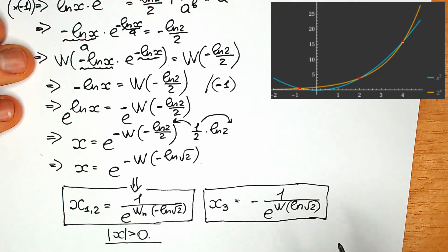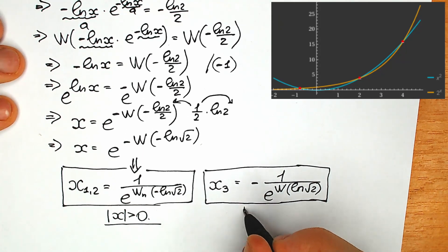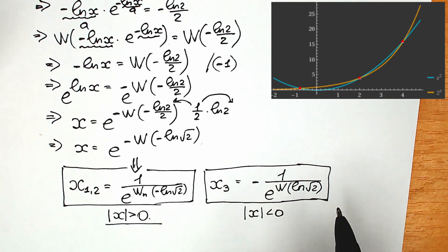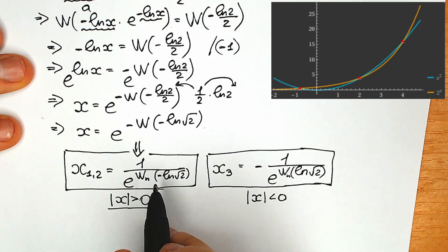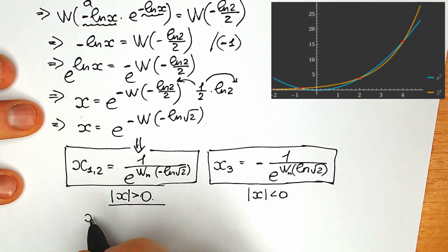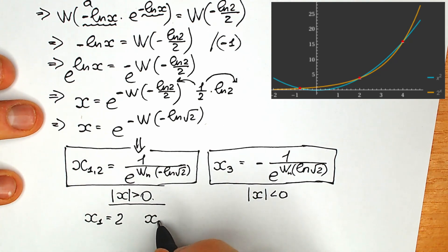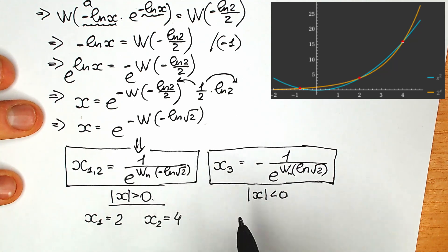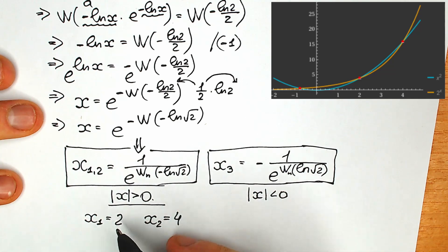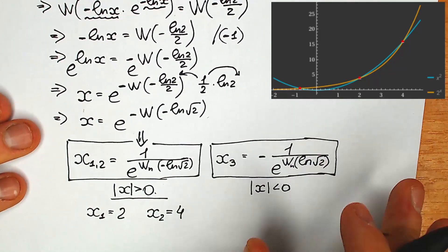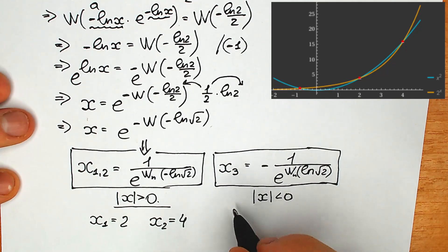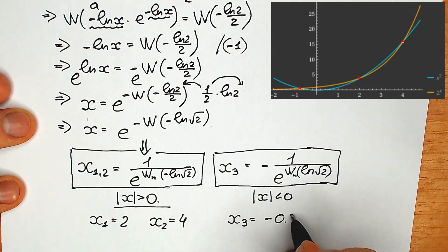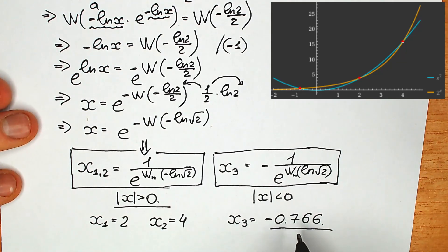A lot of students are confused about this root. When you plug in the value with all the Lambert W function indices in a calculator, you will get two roots from the first case: x first equals 2, and x second equals 4 — which we didn't find before. So from here, with the Lambert W function indices, we have two roots. A lot of students might say, 'I knew these roots.' But when you plug in x third in your calculator, you get x third equal to minus 0.766, and there is no way you can easily find this root without this full solution.